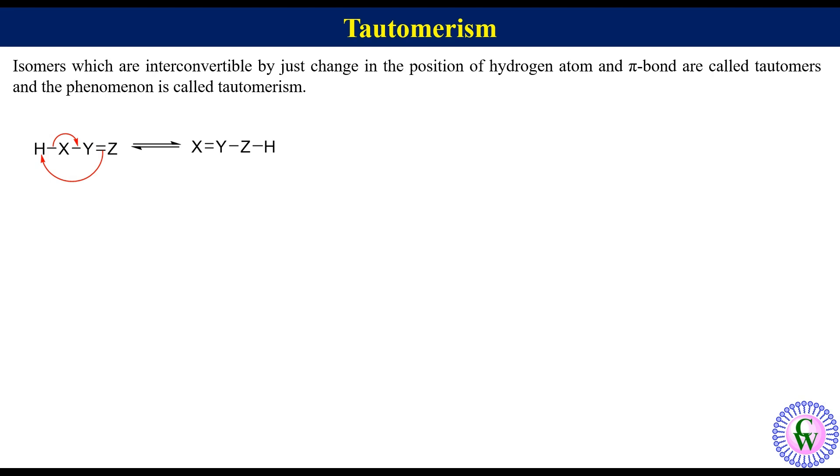Generally one tautomer is more stable than other. In that case the arrow in the direction of more stable tautomer is longer than the arrow in the direction of less stable one. Thus if left side tautomer is more stable than right side tautomer then the arrow in the left side direction will be longer than the arrow in the right side direction.